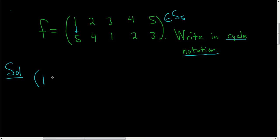5. So we put a 5 here. So 1 goes to 5 and then we ask ourselves where does 5 go? Well 5 goes to 3, so we write the 3 down and then we ask ourselves where does 3 go? Well 3 goes back to 1, so it goes back to where we started, so we close the parentheses.